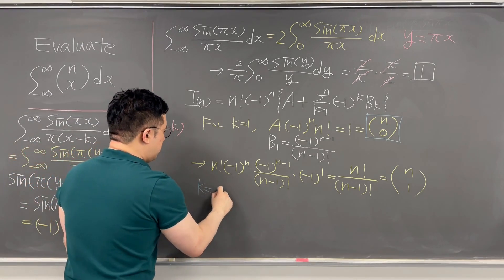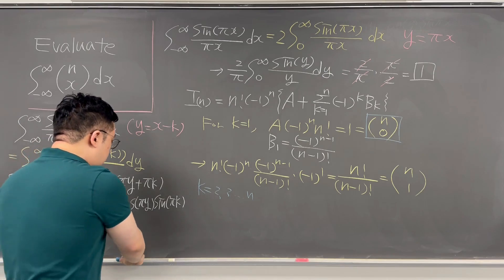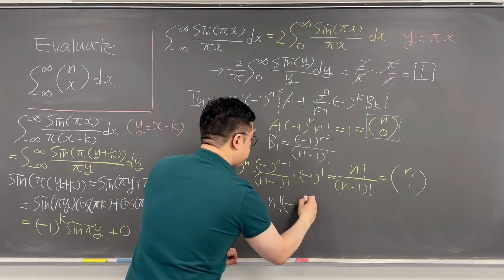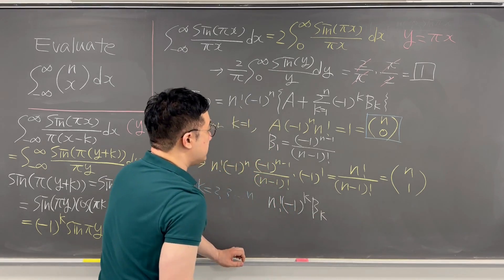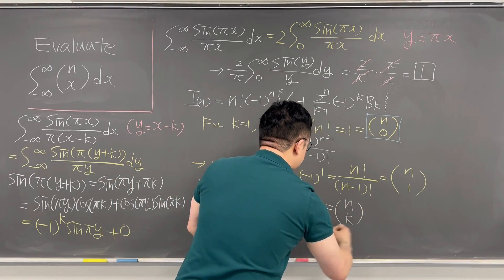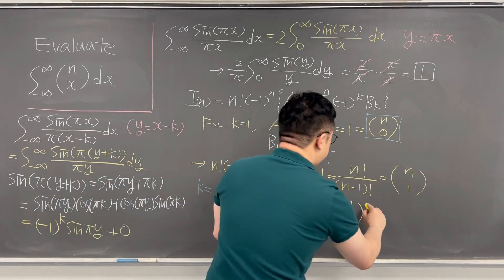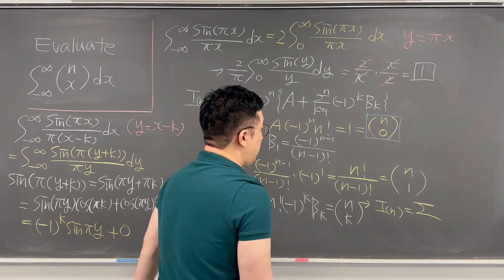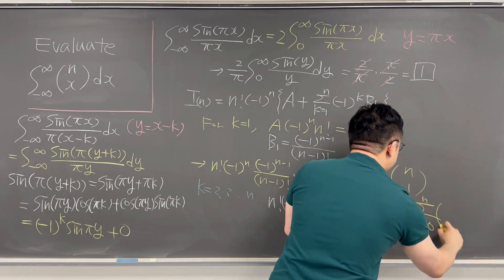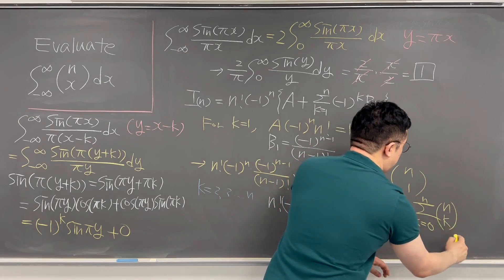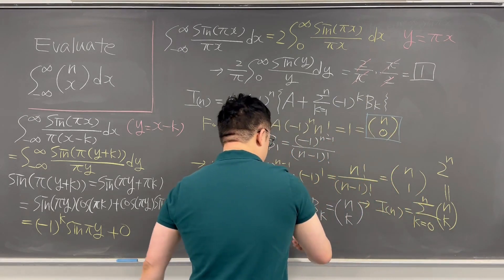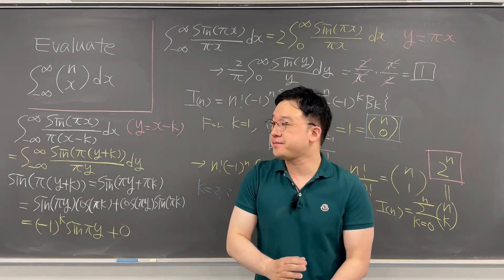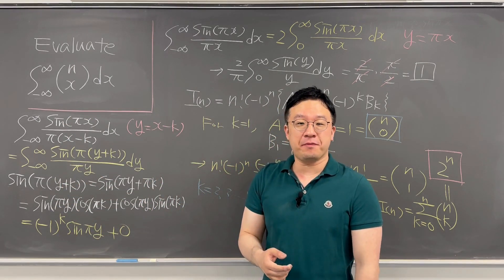Finding k=2, 3, all the way up to n, the pattern gives that (-1)^k times B_k equals C(n,k) divided by n factorial. So I_n is the summation from k=0 to n of C(n,k), which equals 2^n. The final answer for this binomial integral is 2^n. Pretty interesting integral — I'll be back with more questions like this soon.